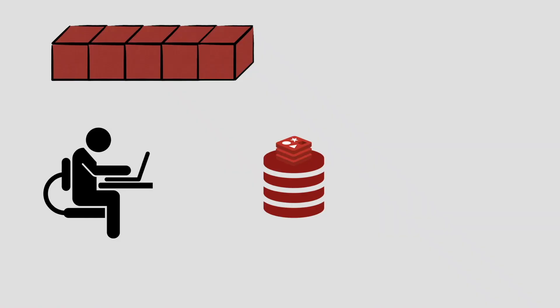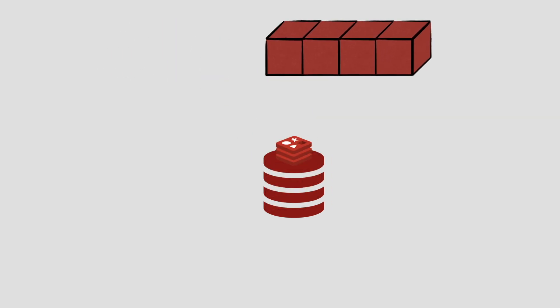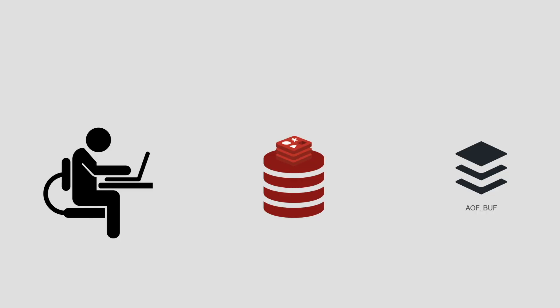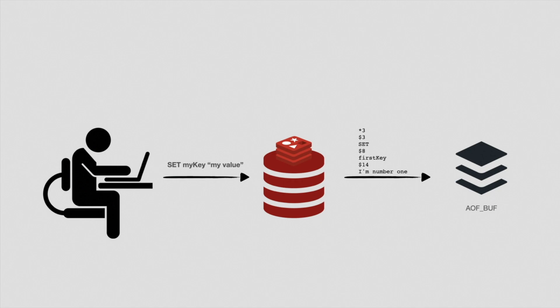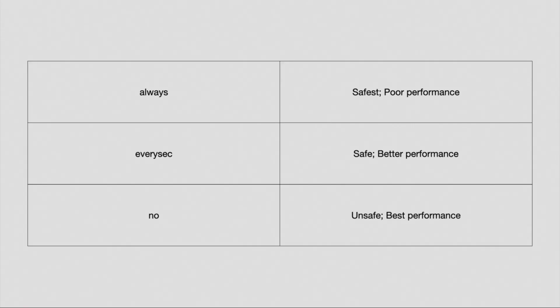AOF — Append-Only File — is another persistence mechanism that logs every write operation received by the server. These logs can be replayed at server startup to reconstruct the original dataset. Commands are logged using the same format as the Redis protocol. When Redis finishes executing a write command, it appends the command to the end of the server's buffer in protocol format. The flushing of the buffer is determined by the 'appendfsync' setting: 'always' is the safest but offers poor performance; 'everysec' is safe with better performance and is the default; and 'no' lets the operating system decide when to flush, offering the best performance but being unsafe.